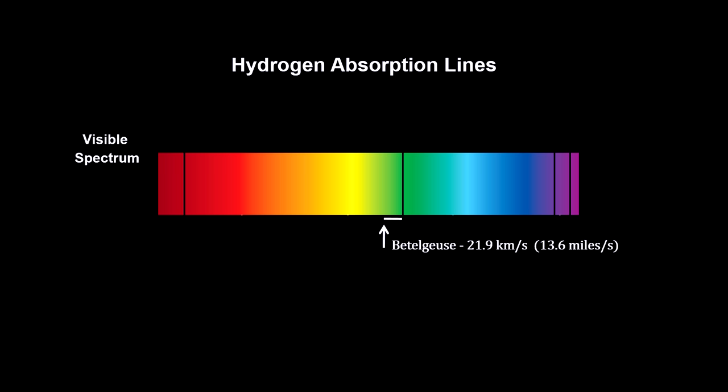The key to measuring the Doppler effect is to measure the change in position of the spectral lines. The further the shift, the faster the radial velocity.